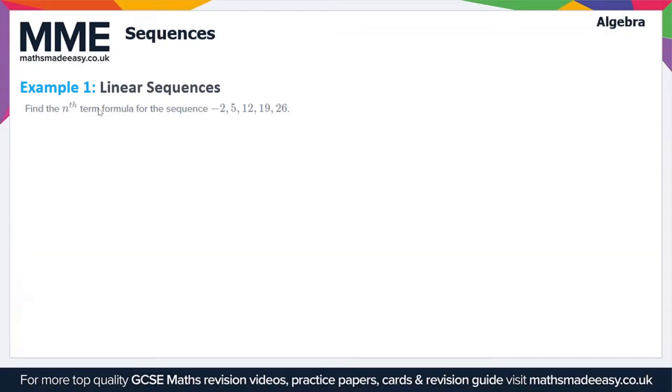Welcome to the Maths Made Easy tutorial on sequences. This is the last video on this topic. We're just going to run through a few example questions. We'll start with this one on finding the nth term of a linear sequence. Here we have the sequence -2, 5, 12, 19, and 26, and we want to find the nth term of this sequence.